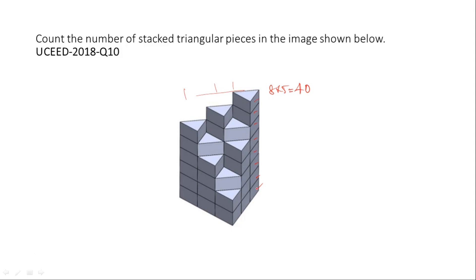But in our columns, some pieces are missing. In this column, 2 are missing — so minus 2. Here, 1 is missing — minus 1. Here, 3 are missing — minus 3. And here, 2 are missing — minus 2. In total, 8 are missing. So 40 minus 8 equals 32 blocks.